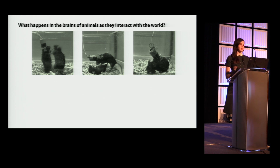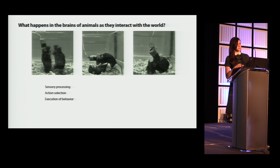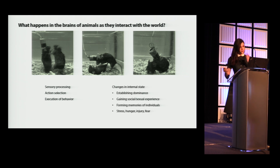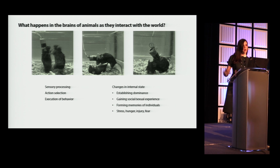The Anderson Lab at Caltech is interested in what's going on in the brains of animals as they're interacting with the world or with conspecifics. Traditionally you can think of this as a robotic model: you get a sensory input, perform action selection, and execute a behavior. But for survival behaviors, this process is very flexible and depends on the animal's internal state — changes like establishing dominance, forming memories, or states like stress, hunger, or fear will change how a sensory situation maps to behavior.